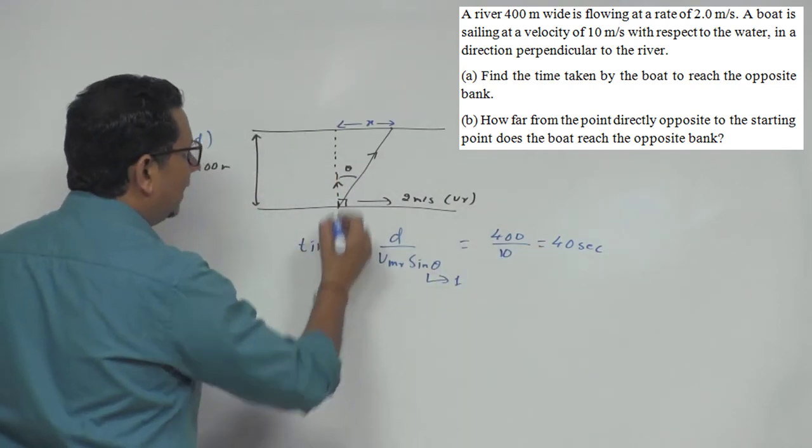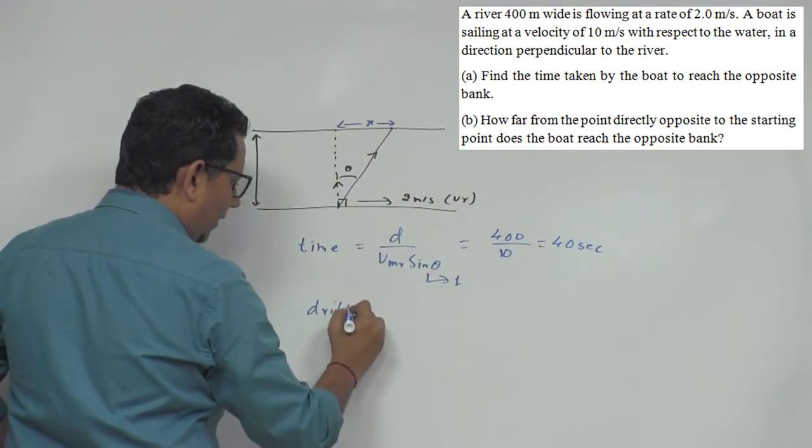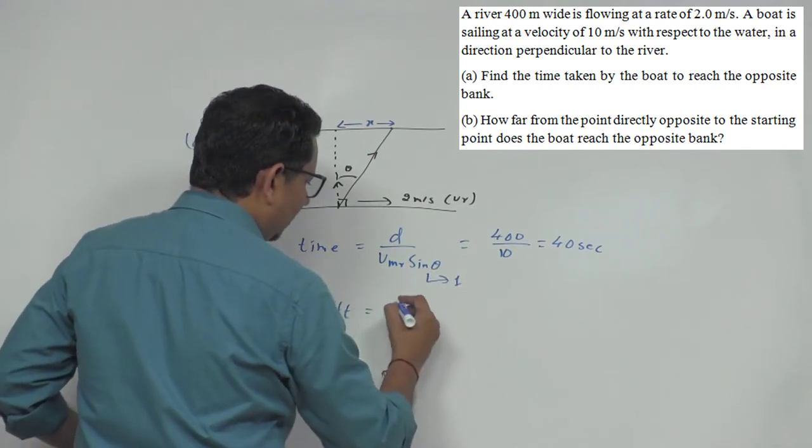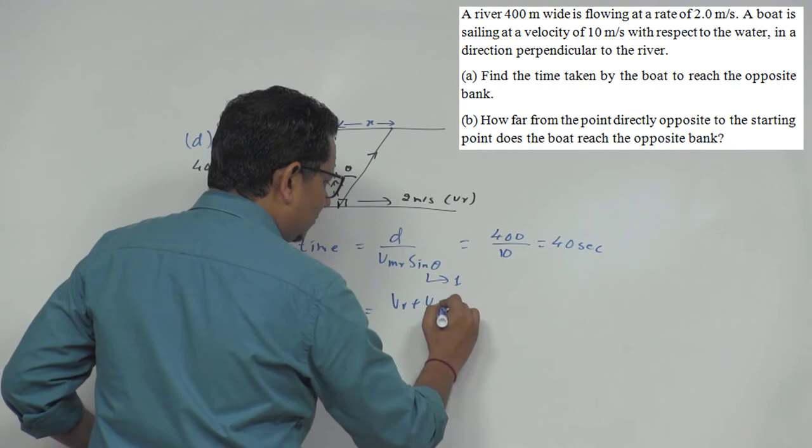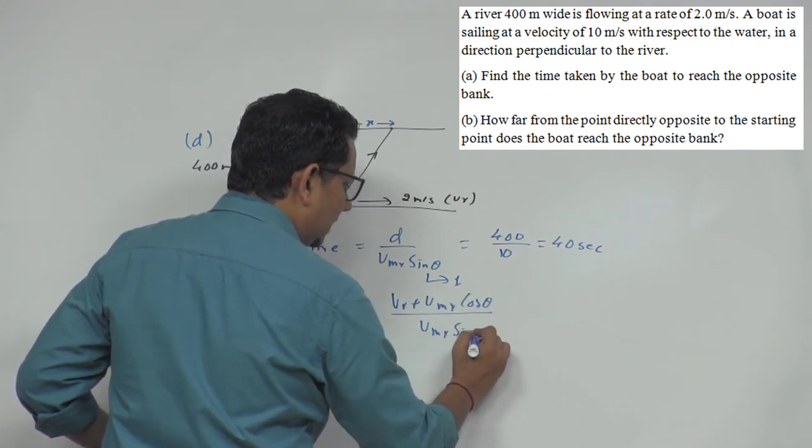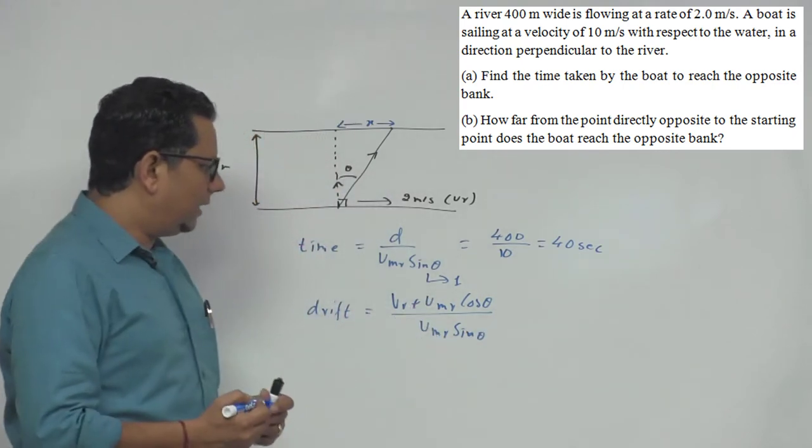For part (b), the drift formula is Vr plus VmR cos theta, divided by VmR sin theta, all multiplied by D. Now, here theta is 90 degrees.